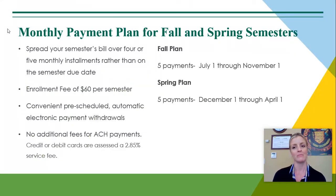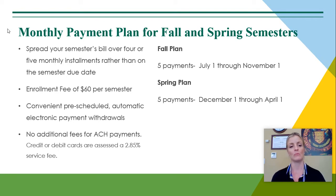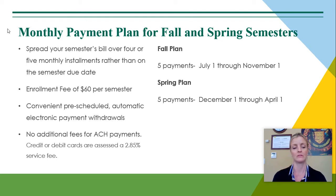Our monthly payment plan is for fall and spring semesters. It allows you to spread your semester's bill over four or five monthly installments rather than on the semester due date. The enrollment fee is $60 per semester. It allows for convenient pre-scheduled automatic electronic payment withdrawals. There are no additional fees for ACH payments. Credit and debit cards are assessed a 2.85% service fee.